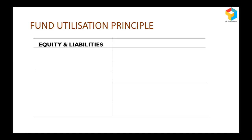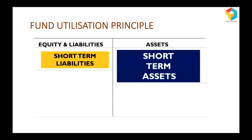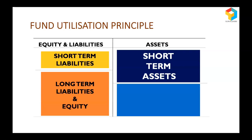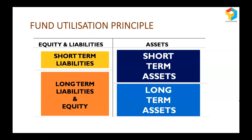Funds can come from owners and outsiders. When funds come from outsiders with a commitment to repay within one year, we call them short-term liabilities, and using those short-term liabilities, short-term assets can be created. But when short-term assets are greater than short-term liabilities, it means a portion of short-term assets is funded by long-term funds, and the remaining long-term funds are being utilized for creating long-term assets. In this way, we can break any balance sheet into four compartments.